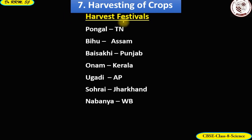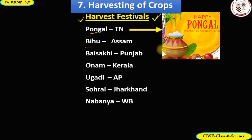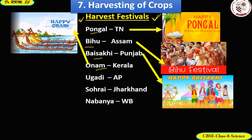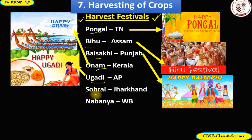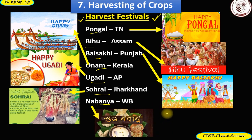Harvest festivals are celebrated when farmers are overjoyed seeing their bountiful crops ready to be harvested. The following harvest festivals are celebrated in different states of India: Pongal in Tamil Nadu, Bihu in Assam, Baisakhi in Punjab, Onam in Kerala, Ugadi in Andhra Pradesh, Soharai in Jharkhand, and Nabanya in West Bengal.